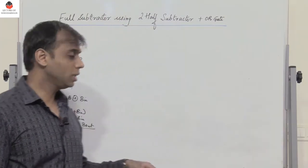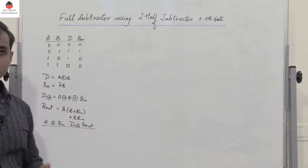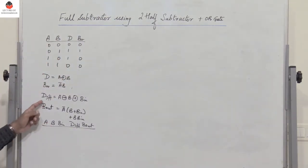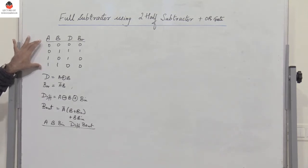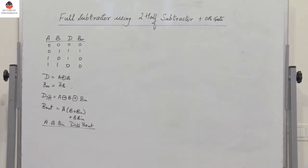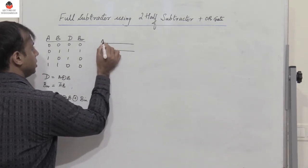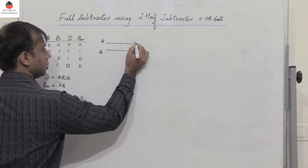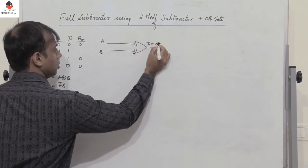Please make sure you go through the full subtractor video — the link is in the description — where I've explained how we get these expressions for difference and borrow out. Now let's see how we can implement a full subtractor using two half subtractors. I have two inputs A and B, and the intermediate output difference is nothing but A XOR B.